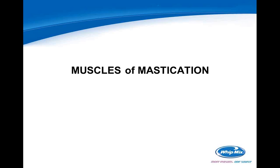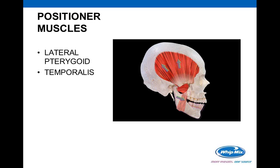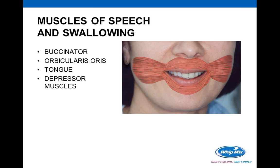Now let's talk about the muscles of mastication. It's important to know which muscles do what and how they function. They're broken into groups. The elevator muscles — masseter, medial pterygoid, and temporalis — lift the mandible up against the maxilla to create the chewing motion. The positioner muscles — lateral pterygoid and temporalis — help position the mandible correctly. Then there are muscles of speech and swallowing: the buccinator, orbicularis oris, tongue, and the depressor muscles.